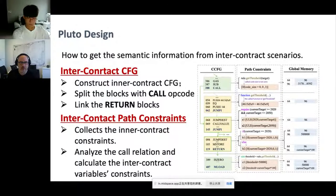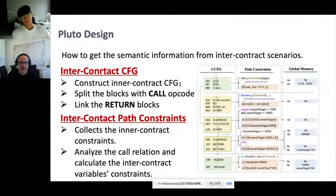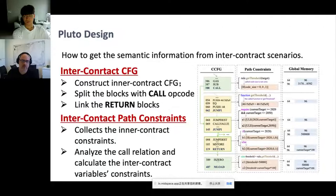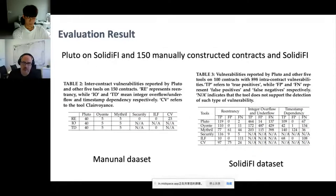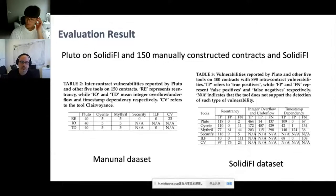Pluto first constructs an intercontract CFG, then splits the blocks at call opcodes, and links the blocks with return opcodes. After that, Pluto collects intercontract path constraints — first collecting inner-contract constraints, then analyzing the call relation and calculating intercontract variable constraints. In evaluation on newly constructed contracts, Pluto can detect 80% of injected intercontract vulnerabilities; the ones it failed to detect are due to unreachable addresses of the called contract.